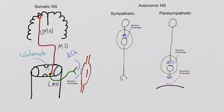The neurotransmitter released at the postganglionic fiber of the sympathetic nervous system is norepinephrine. The target receptors of most postganglionic fibers of the sympathetic nervous system are adrenergic receptors. The adrenergic receptors discussed in this video will be alpha-1, alpha-2, beta-1, and beta-2.